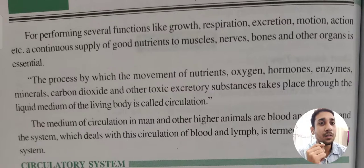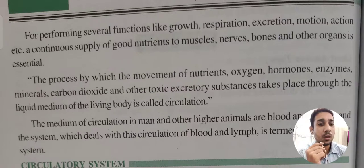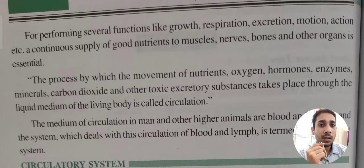The process by which the movement of nutrients, oxygen, hormones, enzymes, minerals, carbon dioxide, and other toxic excretory substances takes place through the liquid medium of the living body is called circulation. The circulatory system is all about the movement of these nutrients and substances throughout the body.